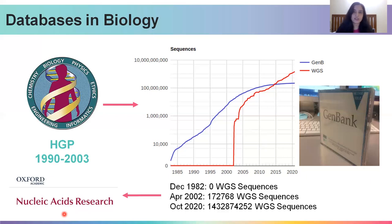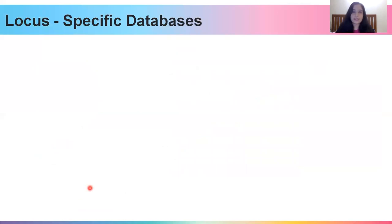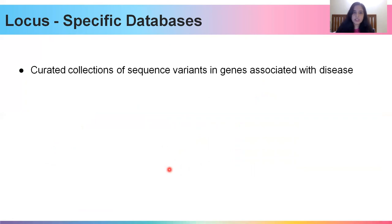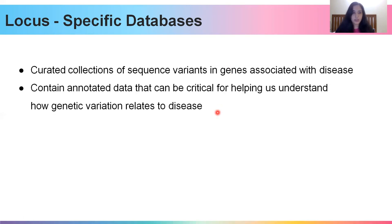One specific type of these smaller databases are the locus-specific databases, or LSDBs. LSDBs are basically curated collections of variants in genes associated with a disease. If you're studying cancer, for instance, there will be certain genes associated with a particular type of cancer, and an LSDB would catalog all the variants associated with those genes. LSDBs typically contain annotated data that can be critical for helping us understand how genetic variations lead to disease.